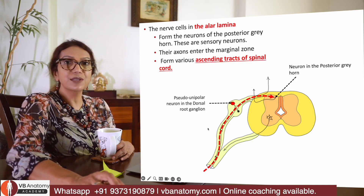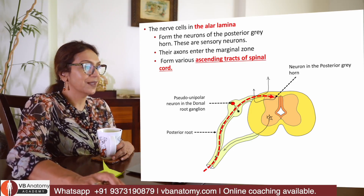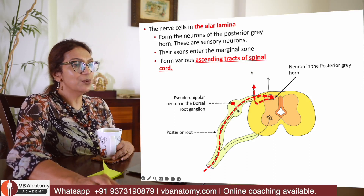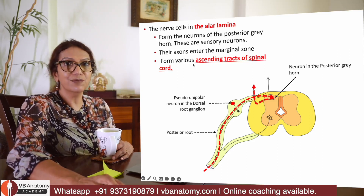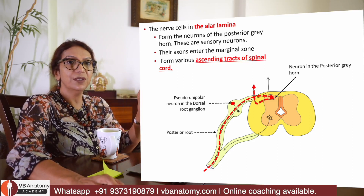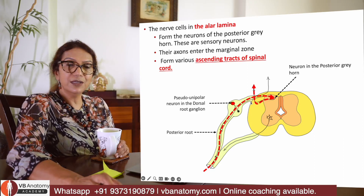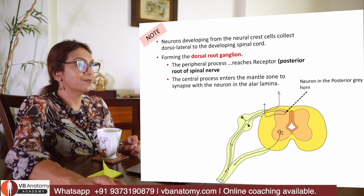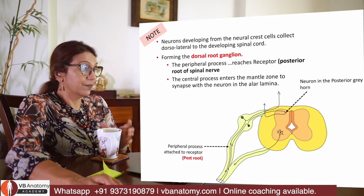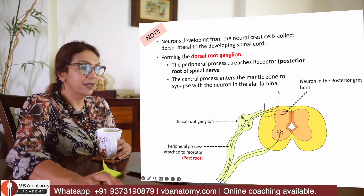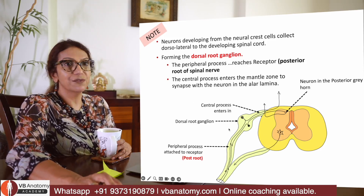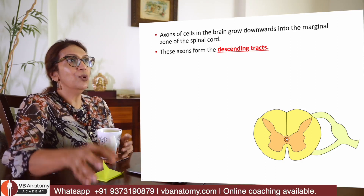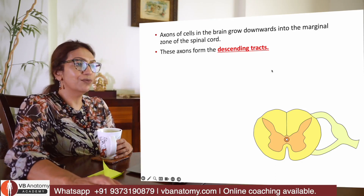Note that this neuron is a pseudo-unipolar neuron. The axon of the posterior grey horn neuron travels into the white matter and ascends, forming an ascending tract. This is how ascending tracts are formed: axons come in, reach the posterior grey horn, and the grey horn neuron's axon enters the white matter ascending upwards. More fibres also come down from the cortex lying in the marginal zone, forming the descending tracts.